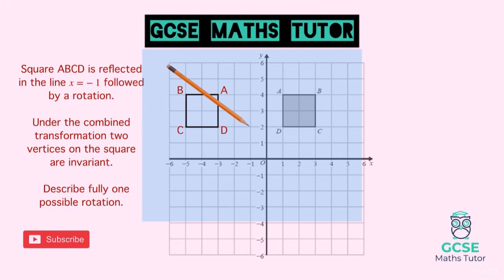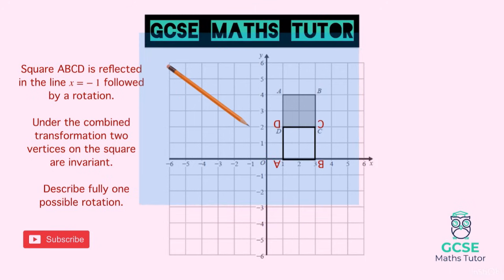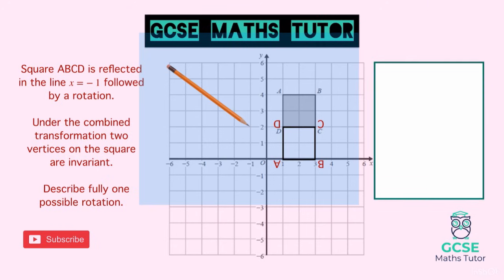Using tracing paper, we trace the reflected square and try a 180 degree rotation with the pencil at a chosen coordinate. You may need to guess a few positions. Placing the pencil at (−1, 2) and rotating 180 degrees, vertices D and C match up perfectly — they land in exactly the same positions as before. So we have two invariant vertices.